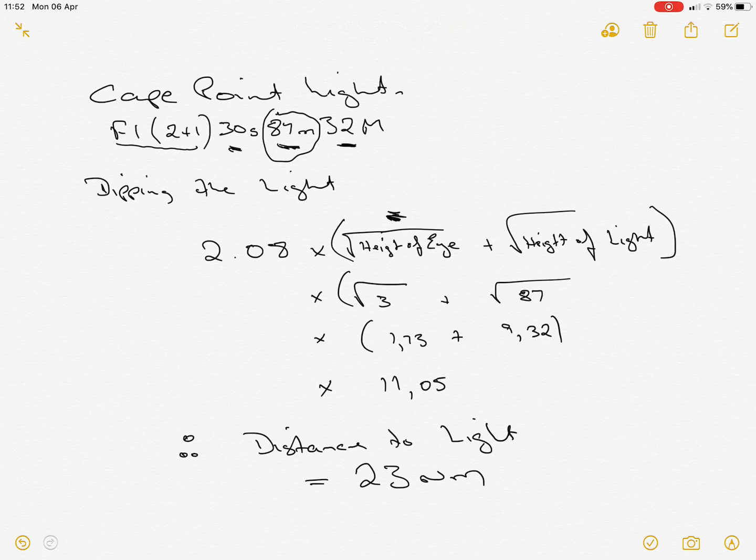So we take the square root of 3 plus the square root of 87. We end up with a calculation of 11.05 which we multiply by a factor of 2.08 and we end up with a distance of 23 nautical miles.